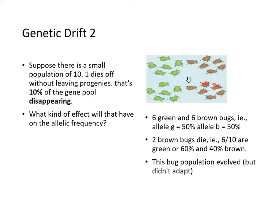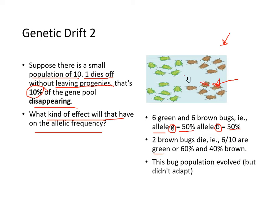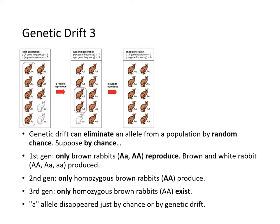Suppose there is a population of 10 — one dies off without leaving progeny, that's 10% of the gene pool disappearing. For instance, with green bugs and brown bugs at six each — 50% each — if two of the brown bugs die, then six out of ten are green, meaning allele G is now 60% and brown is 40%. So this bug population evolved, but they didn't adapt. That's another example of genetic drift.